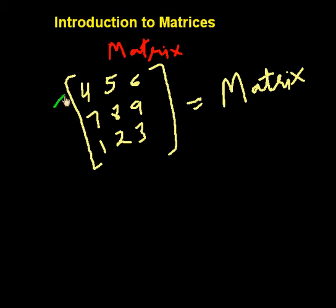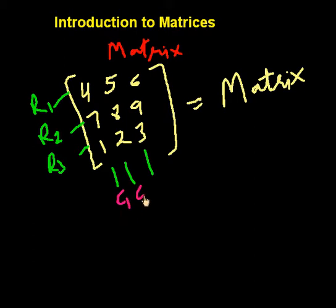In this matrix, 1, 2, 3 are three rows. This is row first, this is row second, and this is row third. And this is column first, column second, and column third.